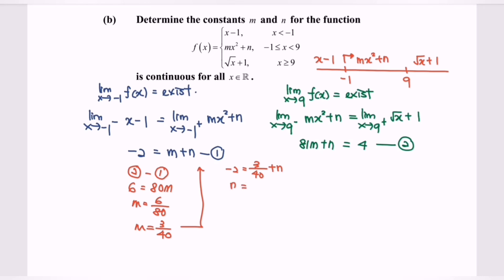n will be equals to negative 2 minus 3 over 40. Finally, we will have the value of n equals negative 83 over 40.